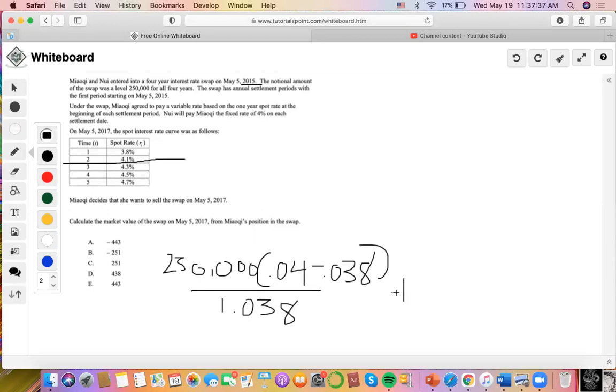And for the second year, $250,000 times 0.04, the fixed rate minus the floating rate from time one to two.